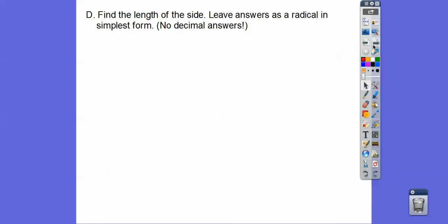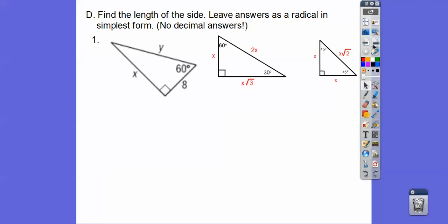Find the lengths of the sides. Leave answers as a radical in simplest form. So these are special right triangles, 30-60-90s and 45-45-90s. So here's the rules right here. Whoops, let me go back here. I went a little bit too fast. Here's the rules. 30-60-90s, if you know the shorter leg, which is opposite the 30. So if this is 60, this is 30, so this is the shorter leg. Then the longer leg is root 3 times the shorter leg, and the hypotenuse is twice the shorter leg. So this is 8 root 3, and that's 16 right there.